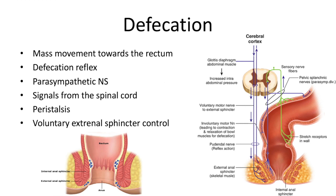The process of defecation begins with a mass movement of feces toward the rectum, which provokes the defecation reflex. This distension reflex is mediated by the parasympathetic nervous system via signals from the spinal cord. Neural signals lead to sigmoid colon and rectal contraction, which involuntarily relaxes the internal and external sphincter. If voluntary relaxation follows, the feces will be discharged; if not, feces will move back to the sigmoid colon until the next wave of peristalsis. Finally, rectum muscle contracts to expel feces.